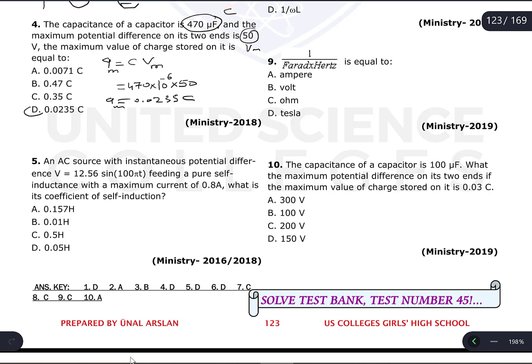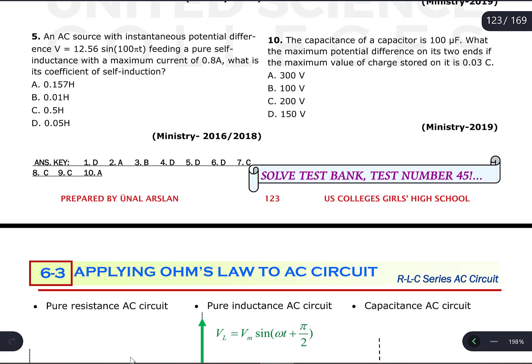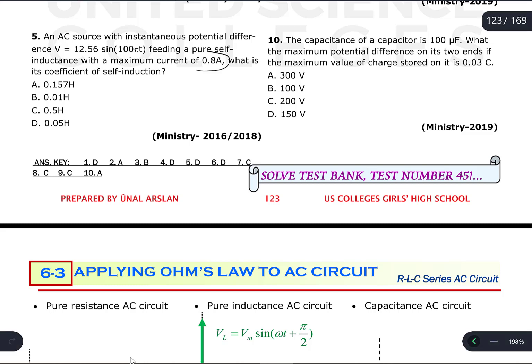Question number five: an AC generator with instantaneous potential difference 12.56 sin(100π·t) feeds a pure self-inductor with a maximum current of 0.8 amperes. What is the coefficient of self-induction? This is the maximum potential difference equation V = V_max sin(ωt), where ω = 100π.